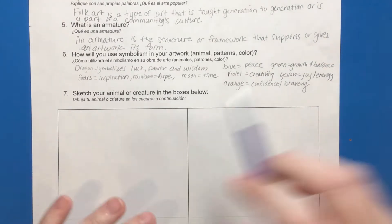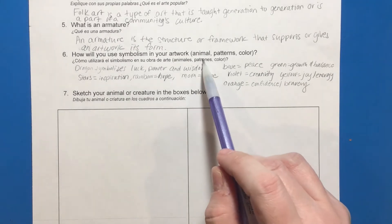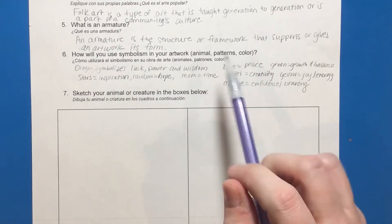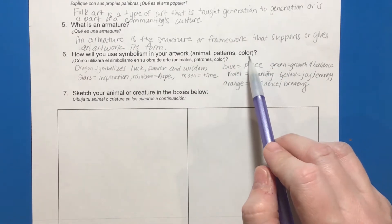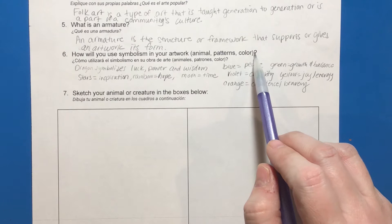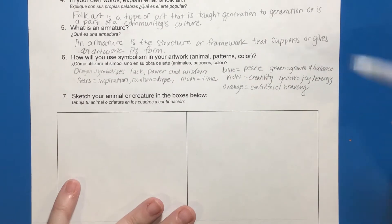So how are you going to use symbolism in your artwork? It's up to you. You can bring it in through the shape of your animal, through the details that you add to your patterns, or through the colors that you choose to use, or it could be a combination of all three. But you should have some sort of symbolism within your design.